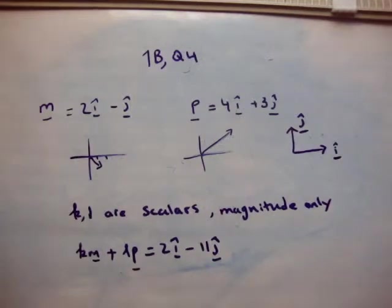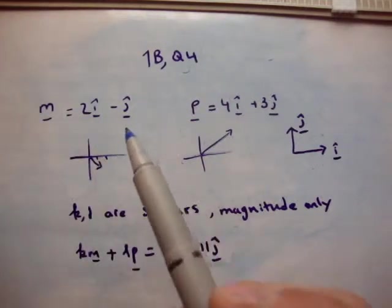The first one is m, and it's given as 2i minus j, or 2i-hat minus j-hat.